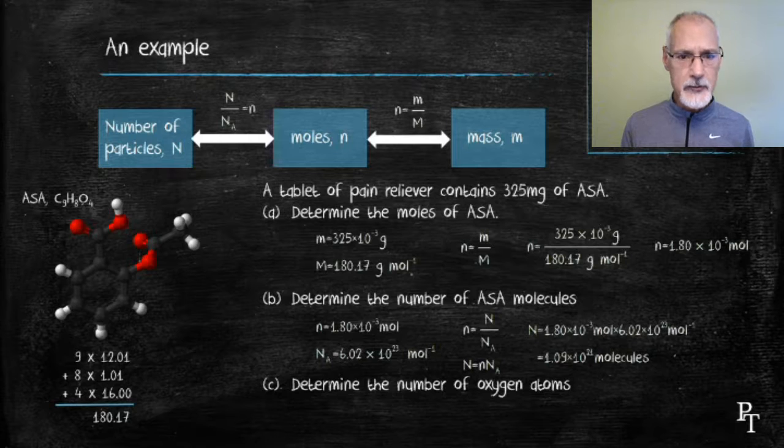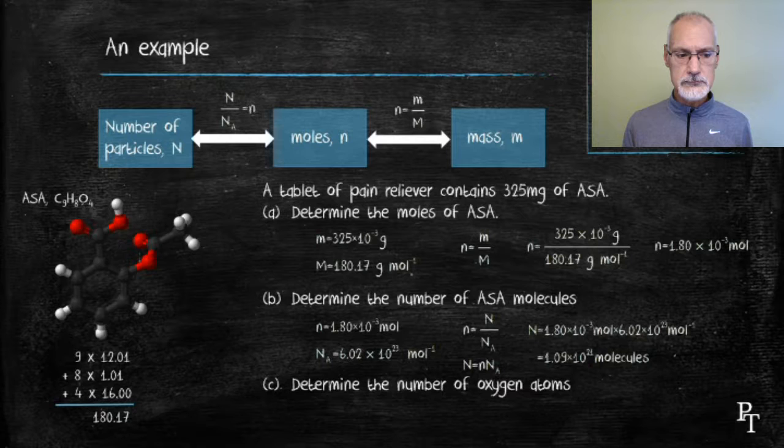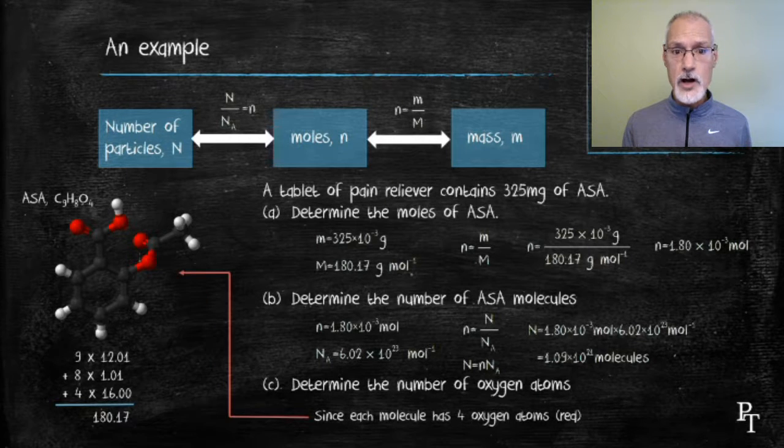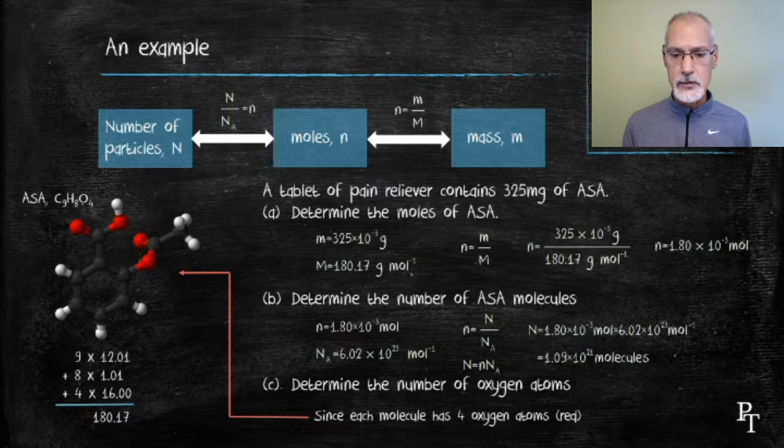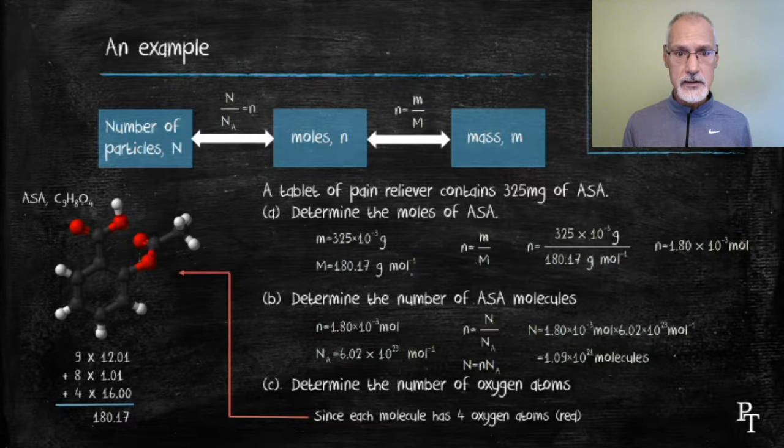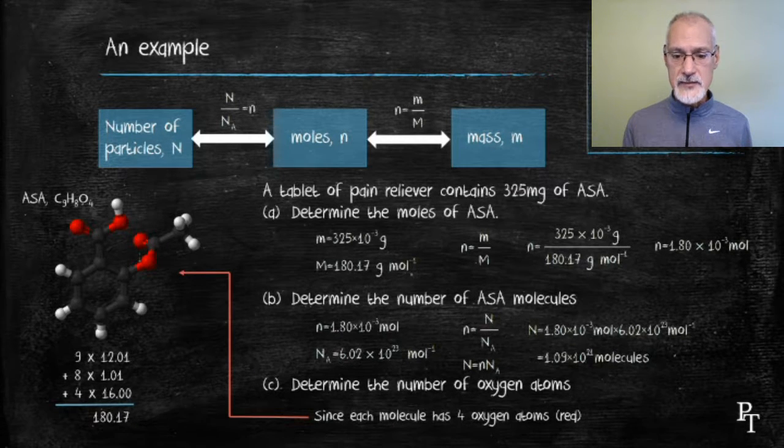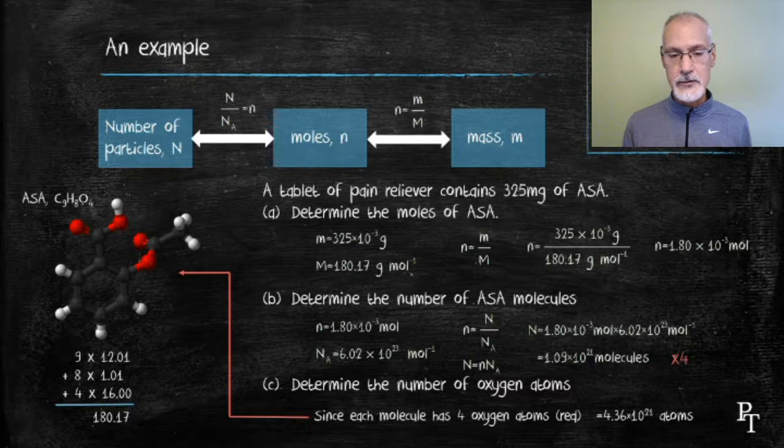Now, I want to go one step further with this problem. How many oxygen atoms would be present in this sample? Well, if I consult the molecule, I can see that there are four oxygens present in each molecule. Hence, if I know the number of molecules, I multiply that answer by 4 to arrive at the number of oxygen atoms.